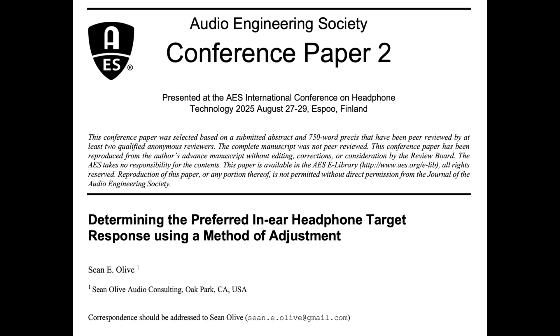The paper is titled 'Determining the Preferred In-Ear Headphone Target Response Using a Method of Adjustment.' It uses the BNK 5128 Diffuse Field Head-Related Transfer Function measured by Oratory1990 as a baseline, letting users adjust the gain of three different filters: a low shelf filter, an ear gain peaking filter, and a high shelf filter.